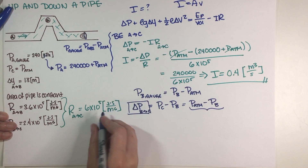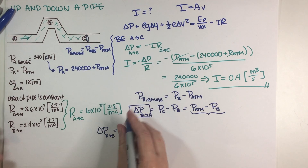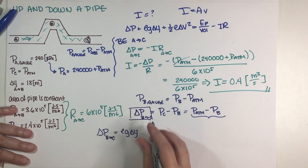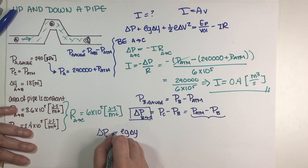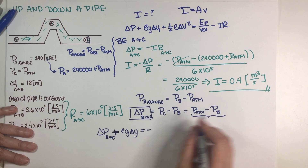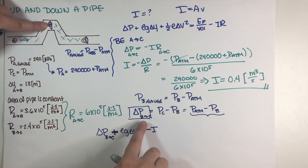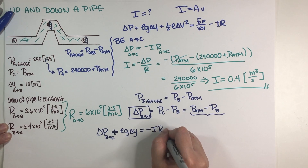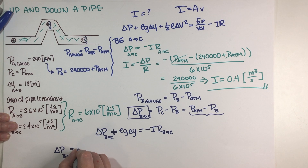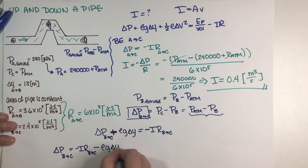Let's apply the Bernoulli equation from B to C. Delta P is what we want. We do have a change in height so we include the rho-g-delta-y term. There is no change in velocity since the area is constant, and there is no pump, so those terms are zero. We do have a resistance term, which is negative I times R_BC, using only the resistance from B to C.